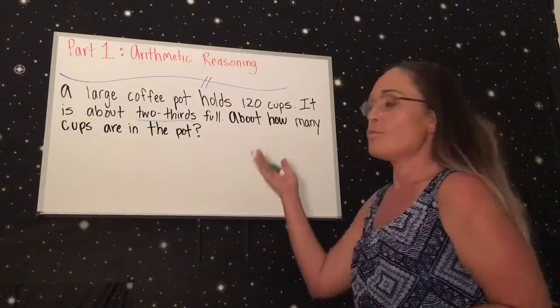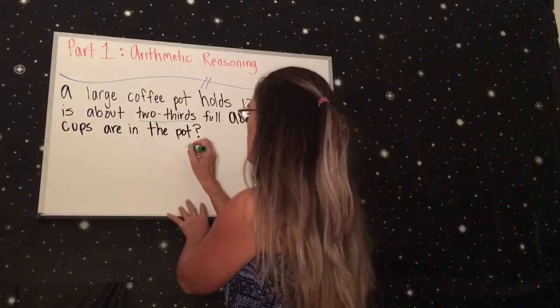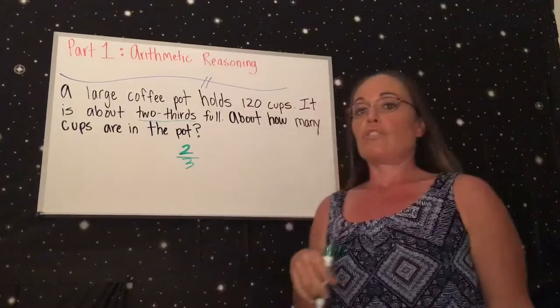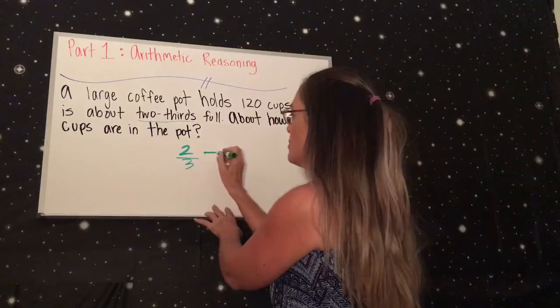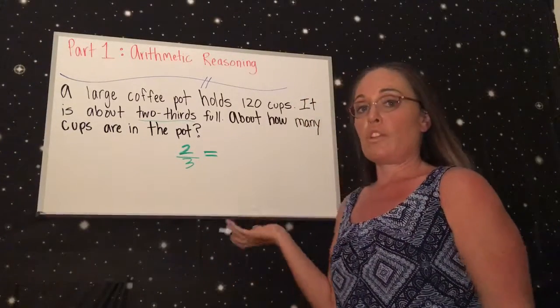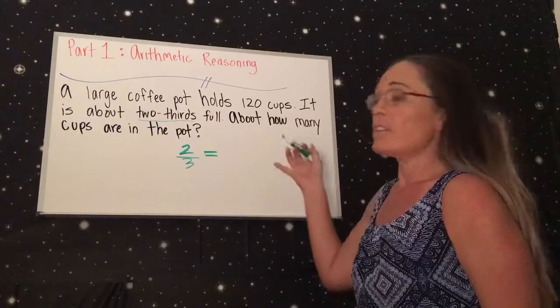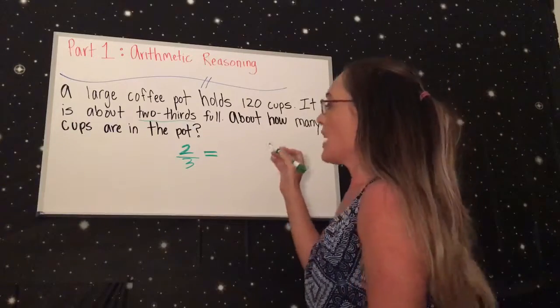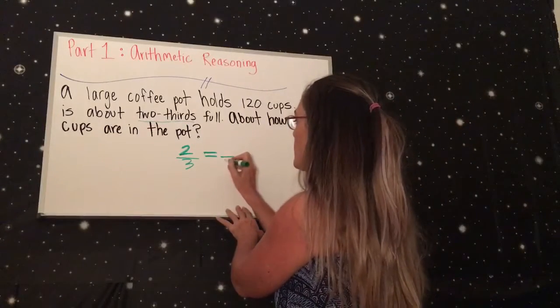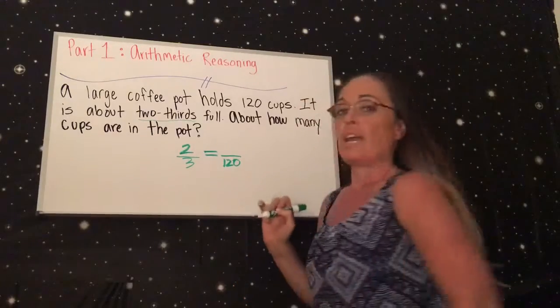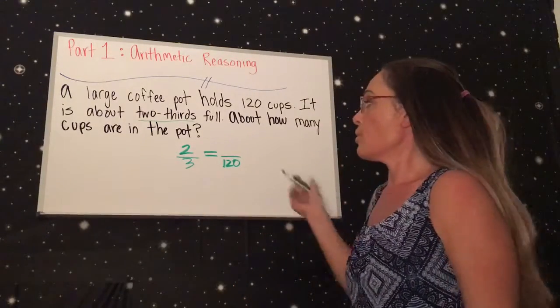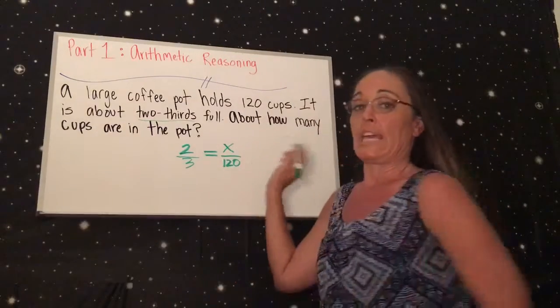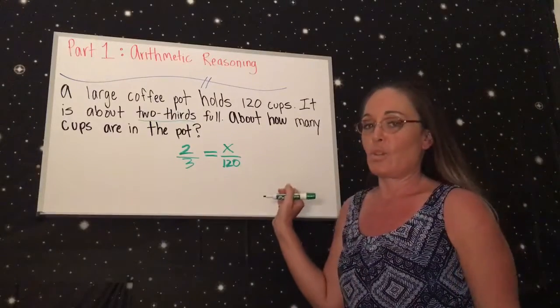So what do you know? You know you have two-thirds, so we're gonna put that in a fraction: 2 over 3. Then we're gonna make that equal to the other information that we know. The only other number that we have in here to use is the 120 cups, so that's the total. The totals always go on the bottom. Then what don't we know? We don't know what is two-thirds of 120 cups, so we're gonna put an X on top of the 120 cups.